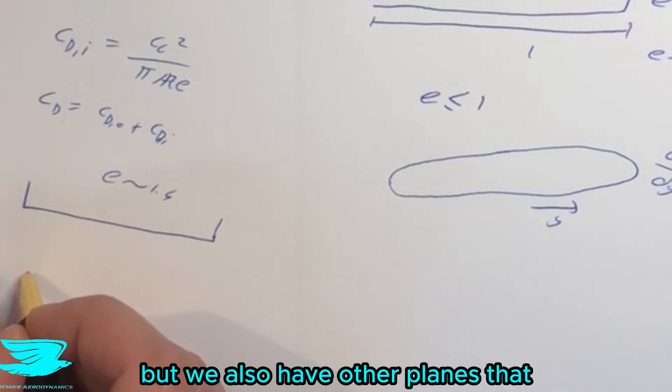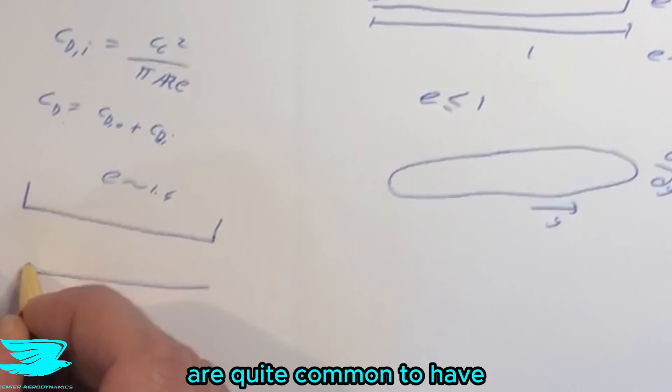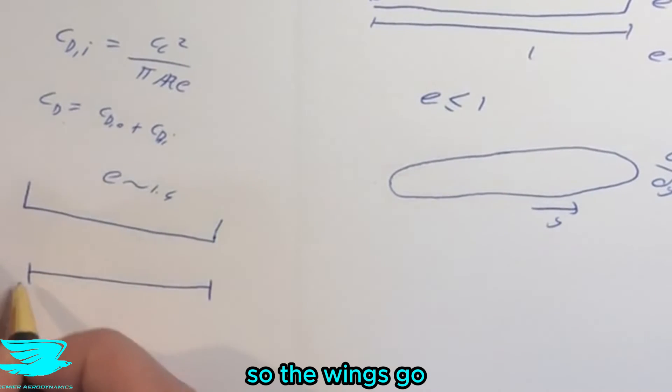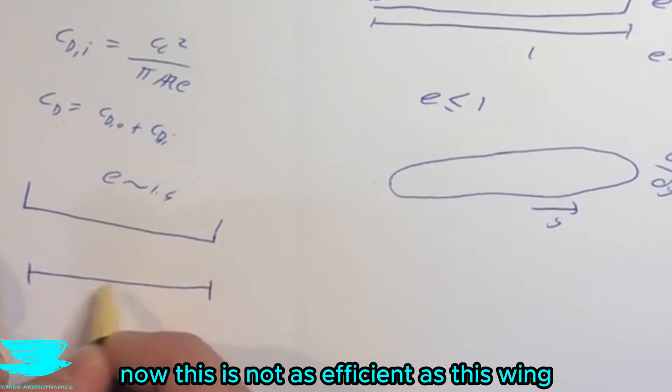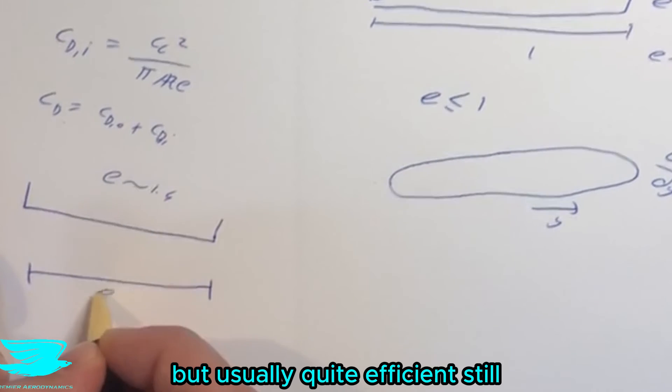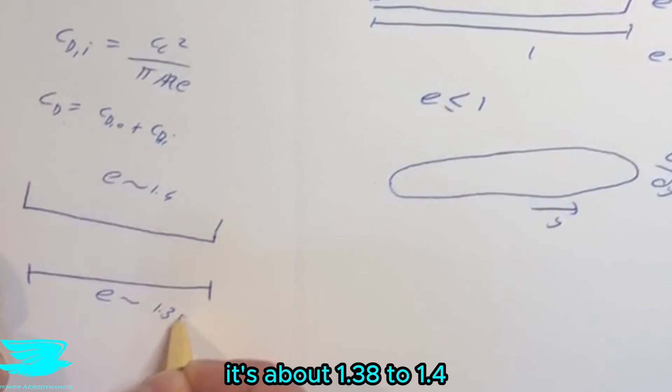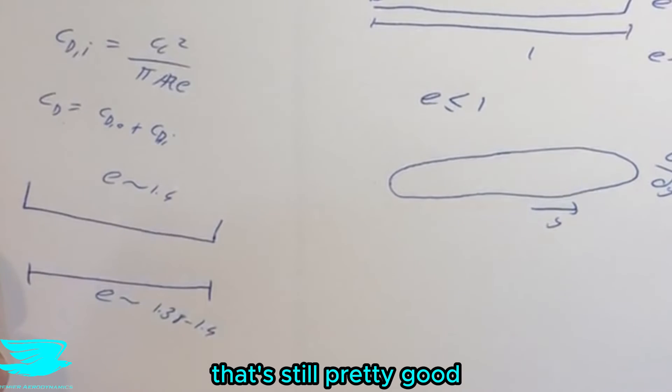But we also have other planes that are quite common to have these types of wing tips. So the tips go up and down. Now, this is not as efficient as this wing, but it's usually quite efficient still. It's about 1.38 to 1.4, so that's still pretty good.